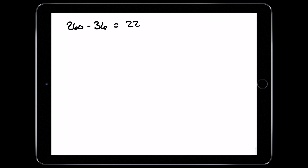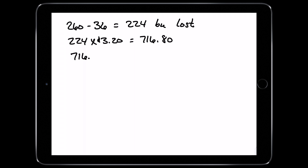260 bushels minus 36 equals a 224 bushel loss per acre. Using a $3.20 price for corn, that amounts to $716.80 lost revenue per acre. 10 acres in total were impacted in this field, resulting in a $7,168 loss per year.